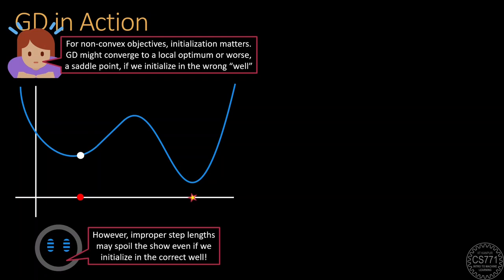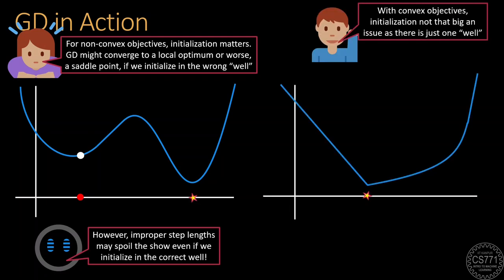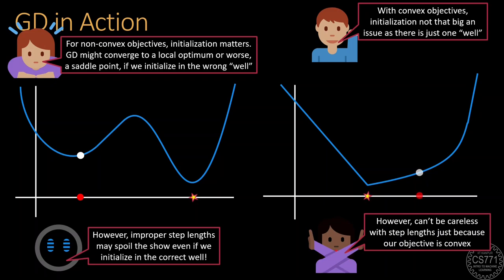Initialization is not that big an issue with convex functions where there is just one well so to say and all local minima are global minima as well. However, even here if our step lengths are too large then we may end up jumping from one point to the other without ever approaching a stationary point.